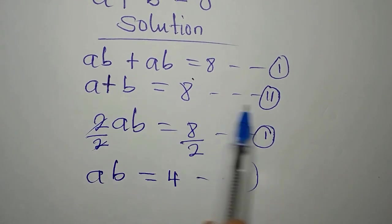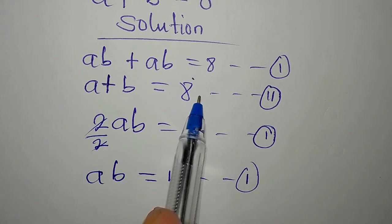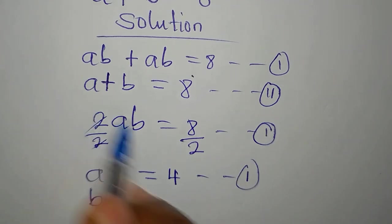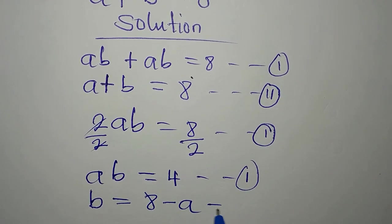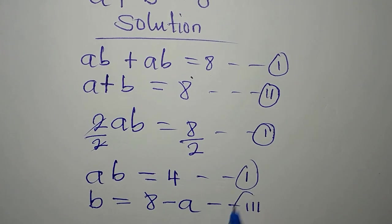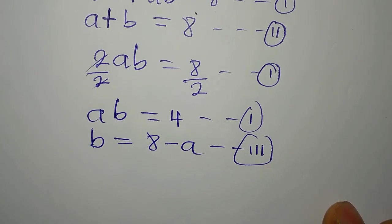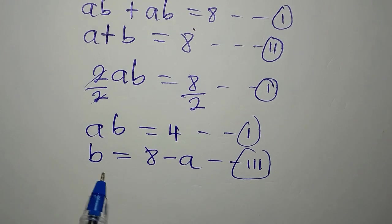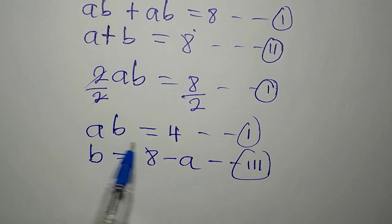Now, from our equation 2, where we have A plus B equals 8, I want to make B the subject. So B will now be 8 minus A. And this becomes our equation 3. Mind you, we have equation 1, 2, and 3 now.